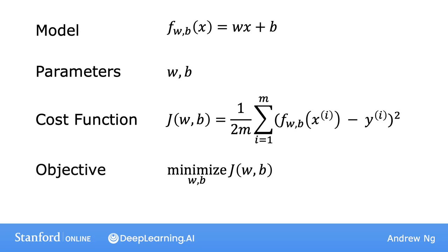In the last video, we had temporarily set b to 0 in order to simplify the visualizations. But now let's go back to the original model with both parameters w and b without setting b to be equal to 0.